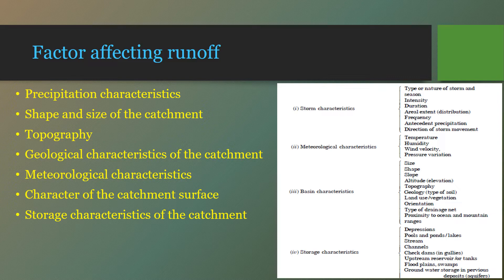Runoff depends on precipitation characteristics. If rainfall intensity is high, more runoff will be generated. If the rainfall duration is long — like four or six hours continuously — more runoff will be generated compared to short duration. The form of precipitation also matters: if precipitation is in rainfall form, more runoff is generated immediately; but if it is in snow form, runoff is generated later when the snow melts, and that snowmelt can generate significant runoff.